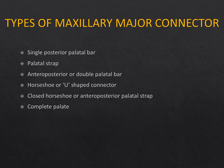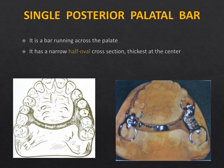The various types of maxillary major connectors are: a single palatal bar, a palatal strap, an anterior-posterior (double) palatal bar, a horseshoe-shaped major connector, a closed horseshoe design (closed from the back), and complete palatal coverage — similar to how acrylic covers the palate in a complete denture, but here cast metal covers the entire palatal surface.